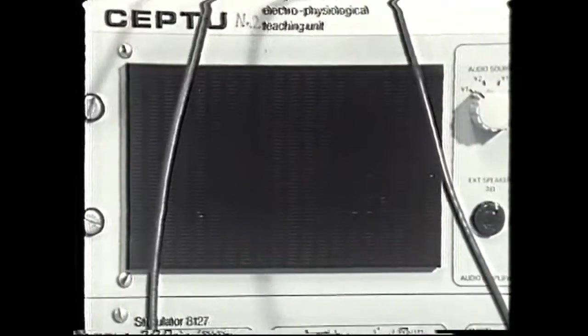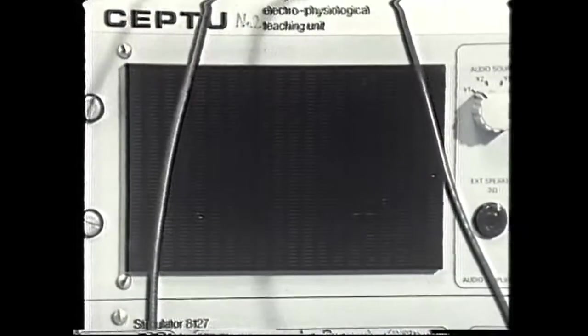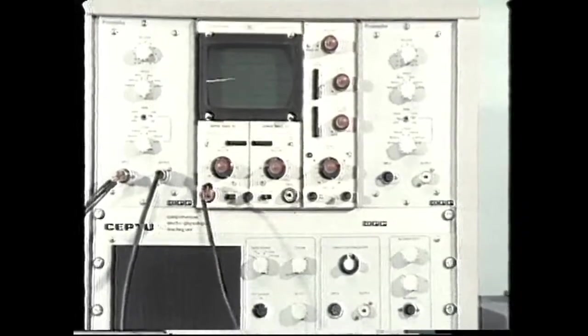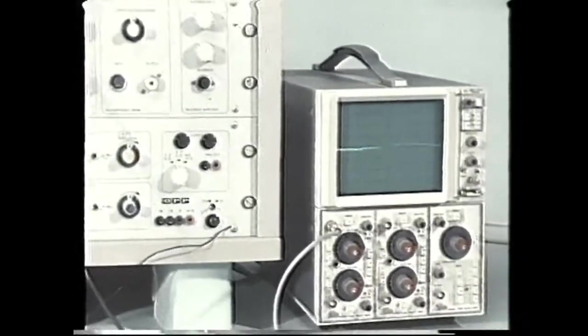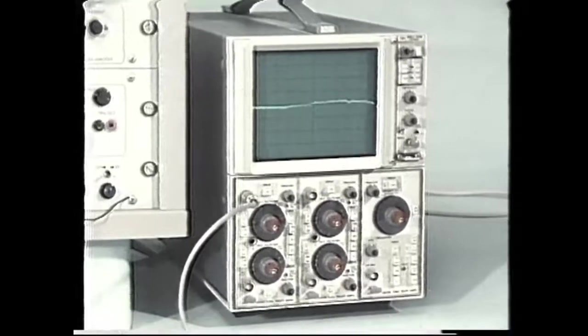The nerve impulses are also converted into sound signals heard from this loudspeaker. A second oscilloscope can store the pattern present at any given moment in time so that it can be examined.